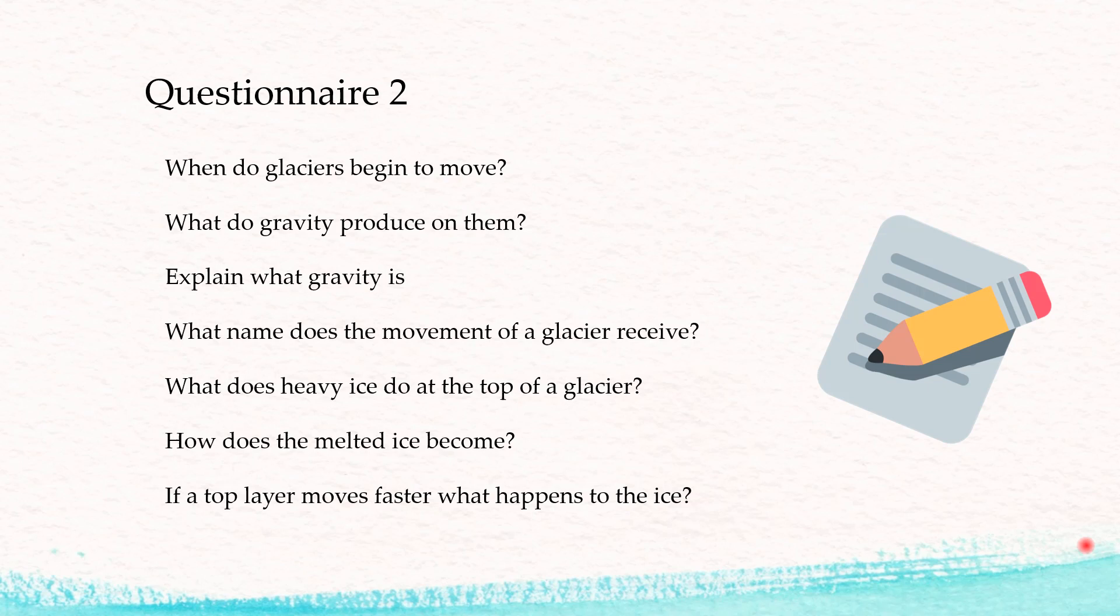When do glaciers begin to move? What do gravity produce on them? Explain what gravity is. What name does the movement of a glacier receive? What does heavy ice do at the top of a glacier? How does the melted ice become? If a top layer moves faster, what happens to the ice?